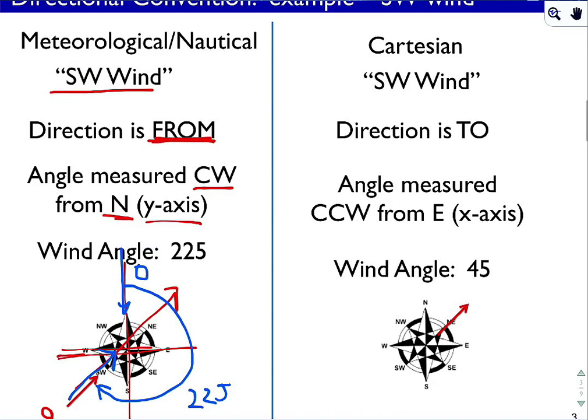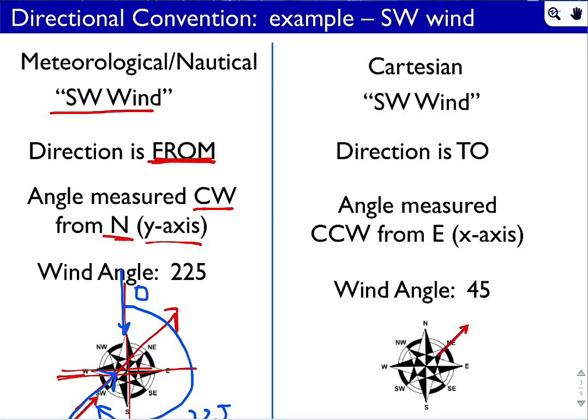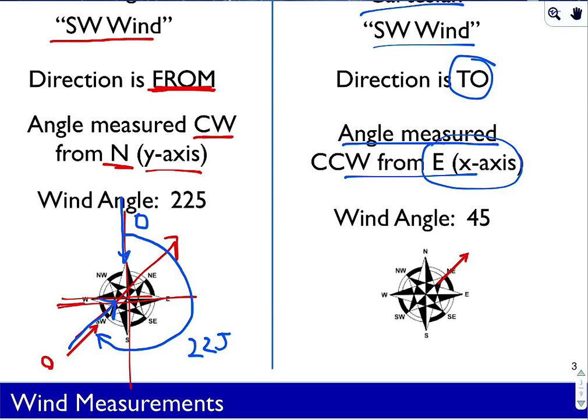The other convention is a traditional Cartesian convention. Again we would still refer to it as a southwest wind. In terms of measuring the angle, the direction is to where the vector is pointing. The angle in this case is measured counterclockwise from the x axis, which is east. So in that case, the angle of the southwest wind, or the wind coming from the southwest towards the northeast, is 45.